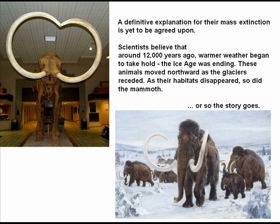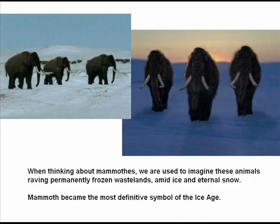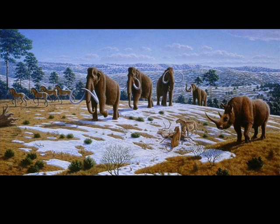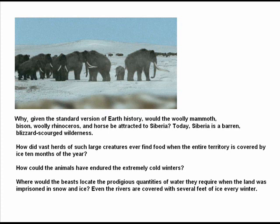Or so the story goes. When thinking about mammoths, we are used to imagining these animals roaming permanently frozen wastelands amid ice and eternal snow. The mammoth became the most definitive symbol of the Ice Age. But given the standard version of Earth's history, why would the woolly mammoth, bison, woolly rhinoceros, and horse be attracted to Siberia?